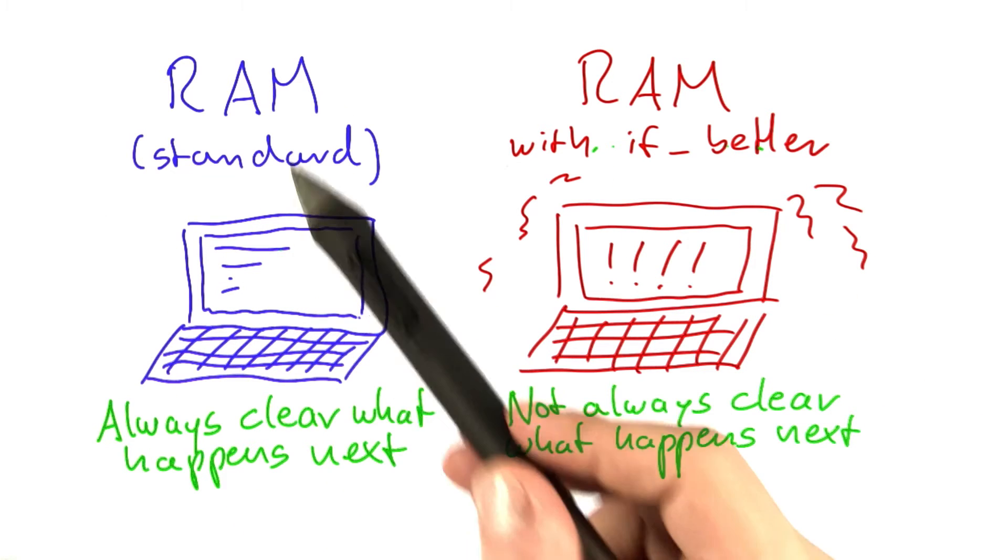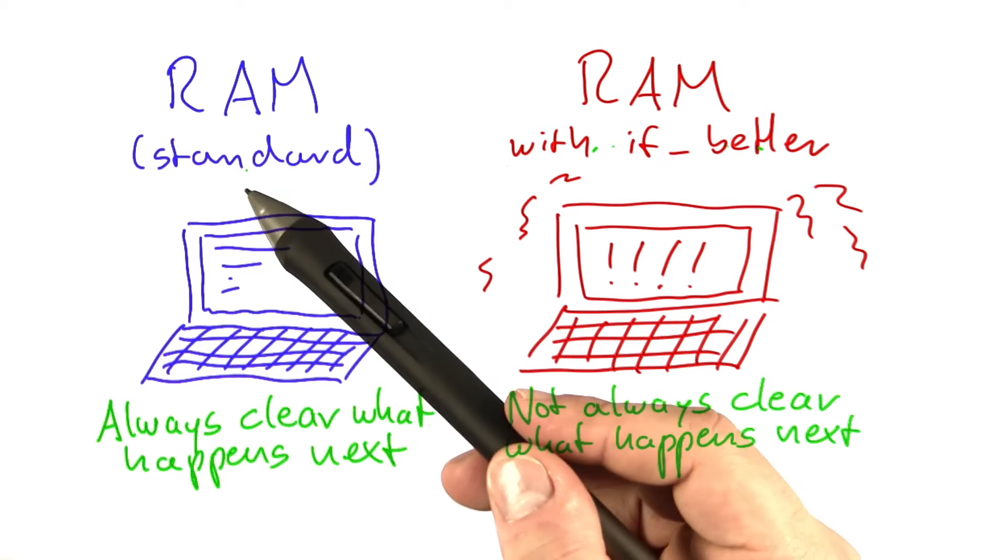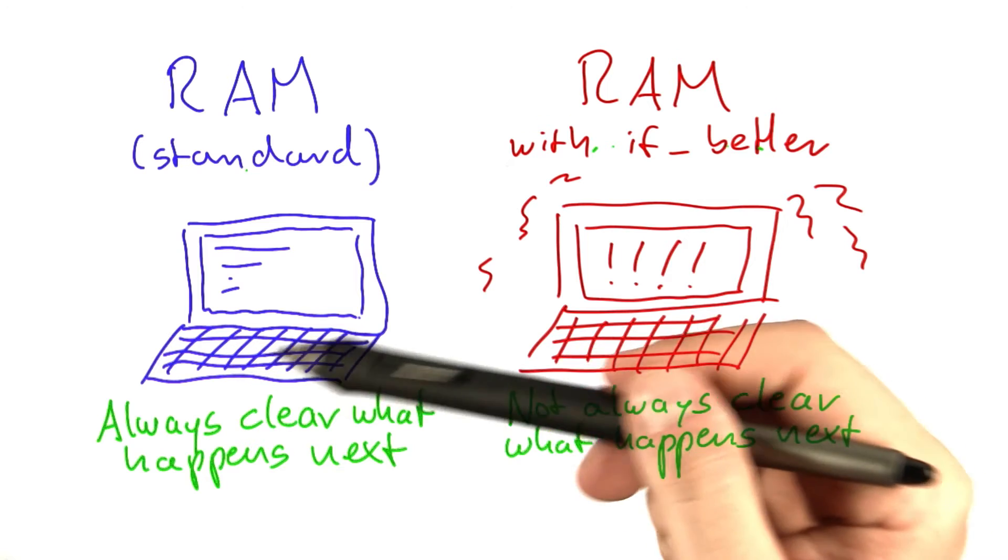Or if you put it in another way, if you go through an algorithm that is written on a standard RAM, then you can basically go through it step by step by hand and say how it's going to behave.